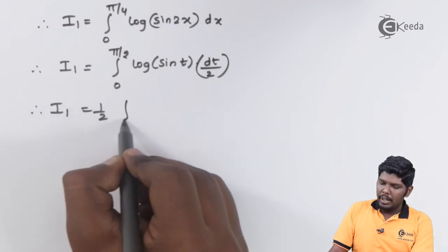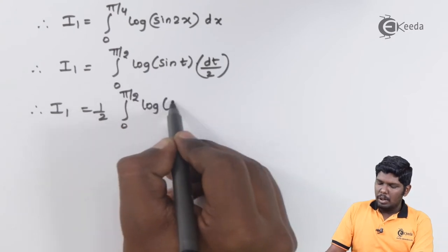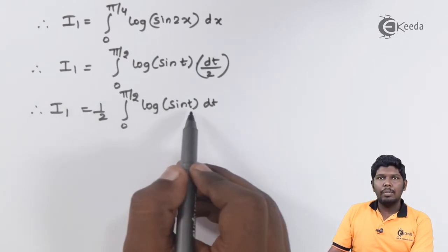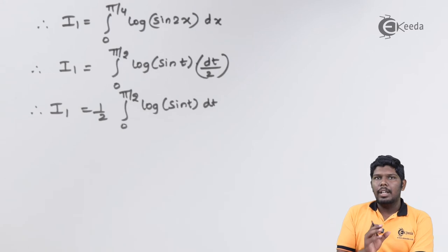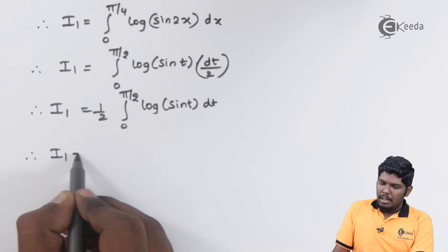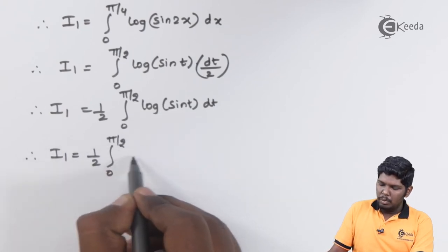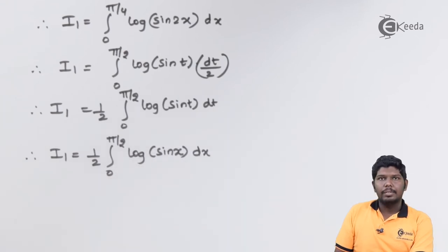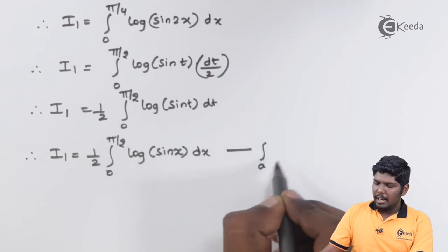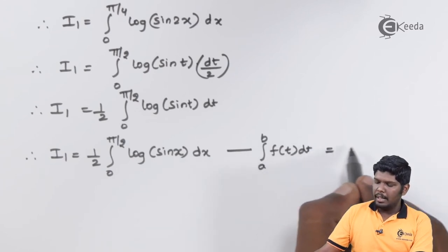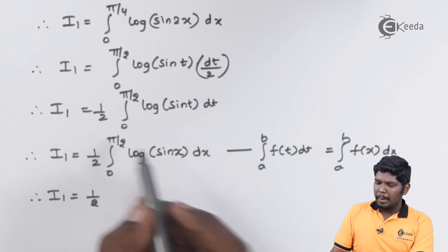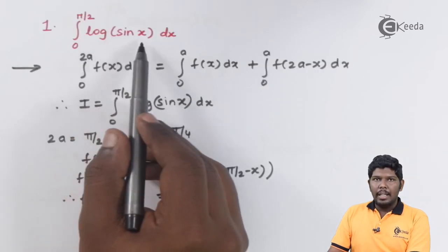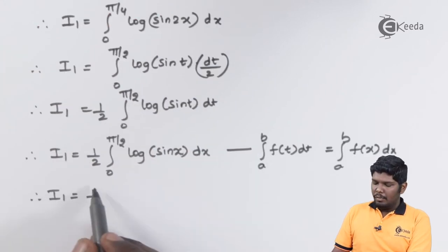After substitution, I1 = (1/2) times the integral from 0 to pi by 2 of log(sin t) dt. In a definite integral, the variable name does not affect the final answer, so we can write this as (1/2) times the integral from 0 to pi by 2 of log(sin x) dx. But this integral is exactly our original I, so I1 = (1/2) I.